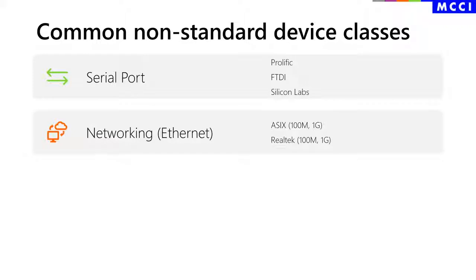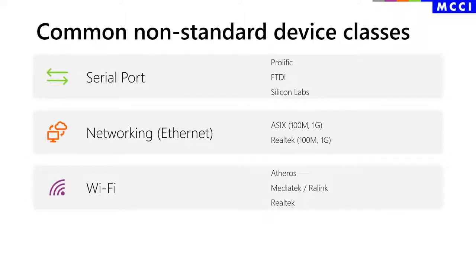USB to Ethernet adapters are generally also proprietary. The most popular ASICs are Realtek. These chips come in several versions and you generally need different drivers for different generations of chips. USB to Wi-Fi adapters are always proprietary because there's no USB standard class for Wi-Fi adapters. MediaTek is most common in embedded systems, but Atheros and Realtek are also strong players in this market.